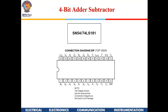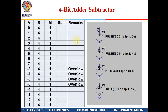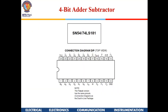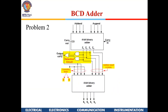Other ICs such as the 74181 can generate an overflow flag, but that is not part of this lab exercise. For now, we proceed with just the 74283. Your task is to verify the two output tables — one for addition (M=0) and one for subtraction (M=1).